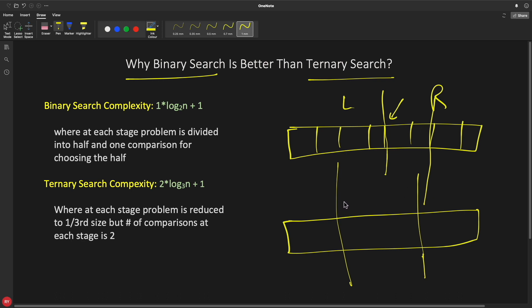So every iteration you have two comparisons whereas this is one comparison to choose. But here the good part is you have one third space left, whereas this is one by two and this is very smaller. So you have very less space to search compared to this one.